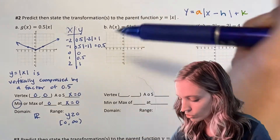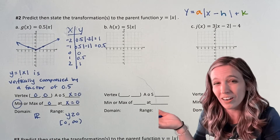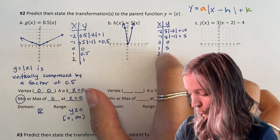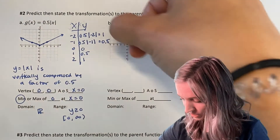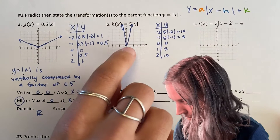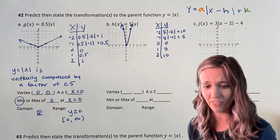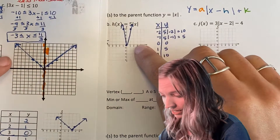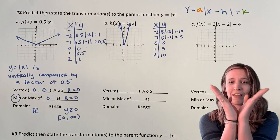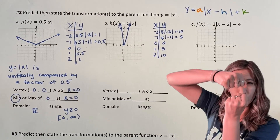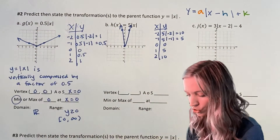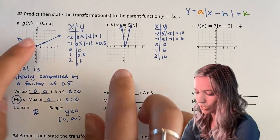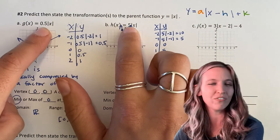Let's try the next one with a=5: y equals 5 times absolute value of x. I'll make a quick table. When I plugged in values, I got big outputs — I could only really plot the middle three points: (−1, 5), (0, 0), (1, 5). The graph got super tall and skinny, so that 5 was a vertical stretch. When a was 0.5 it was a compression; when a was 5 it was a stretch. So there's a pattern here.